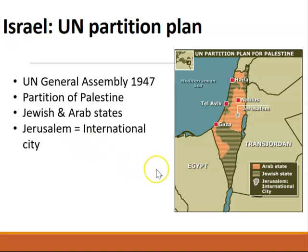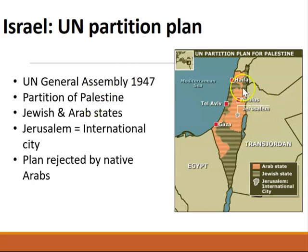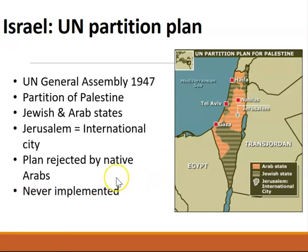The plan was rejected by native Arabs who were in this area. Most of the Jews who were negotiating this had moved in, mostly from Europe. The Arabs didn't like the plan because it divided their land, and the plan also divided Jewish land up here along the upper part of the Sea of Galilee or Lake Tiberias from over by Haifa. It was never implemented, which brings us to the founding of the state of Israel.